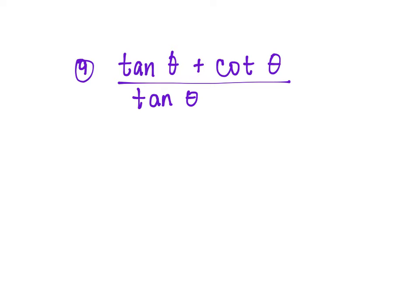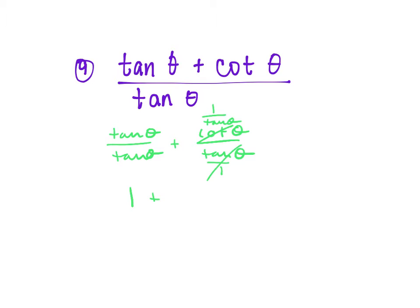Number 9: since we have two terms on top, we break it up. We get tangent θ over tangent θ plus cotangent θ over tangent θ. Tangent over tangent is 1. Change cotangent to 1 over tangent. Keep, change, flip gives 1 over tangent². So we have 1 plus 1 over tangent², which equals 1 plus cotangent² — and that identity equals cosecant².